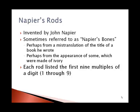There's also a method called Napier's Rods, invented by John Napier. Sometimes it's referred to as Napier's Bones — perhaps from a mistranslation of a title of a book he wrote, or from the appearance of some of these rods, since expensive varieties were made of ivory. I've given you in your handouts some strips that you can cut out, and there's another video in which I demonstrate how to do this. Each rod listed the first nine multiples of each digit — a 1 rod, a 2 rod, up to a 9 rod, usually with more than one copy.